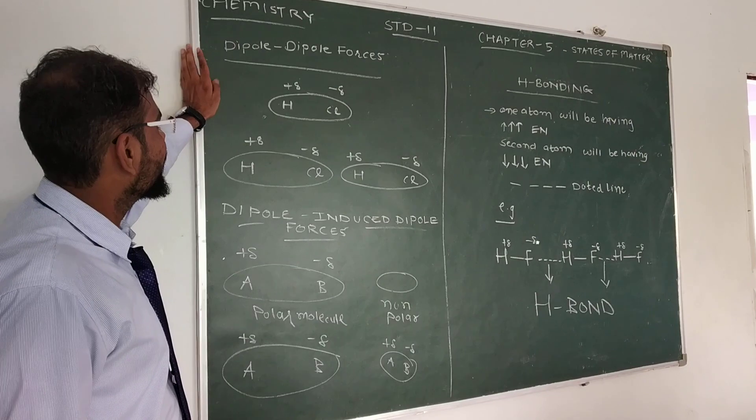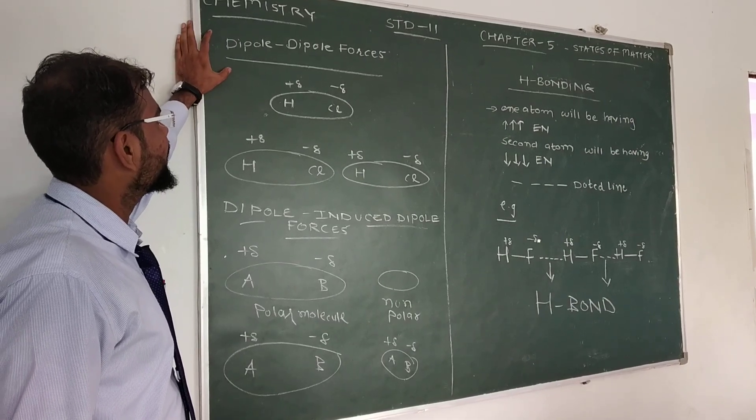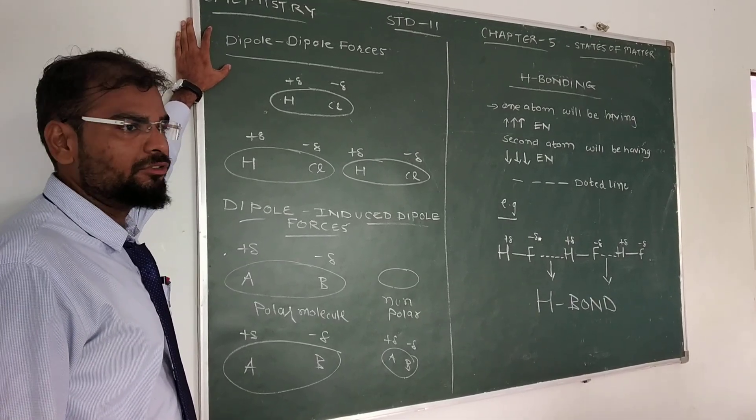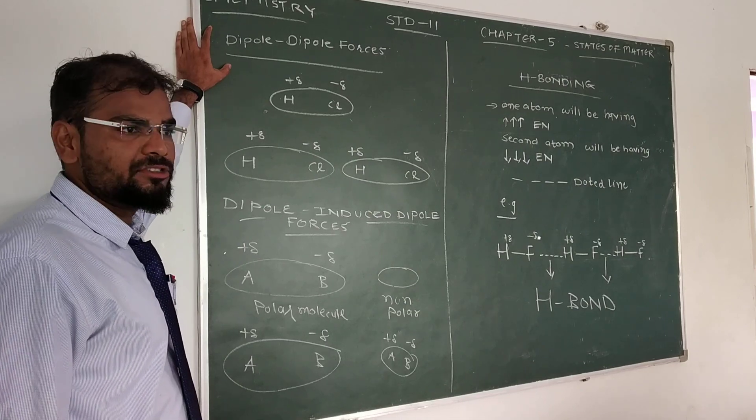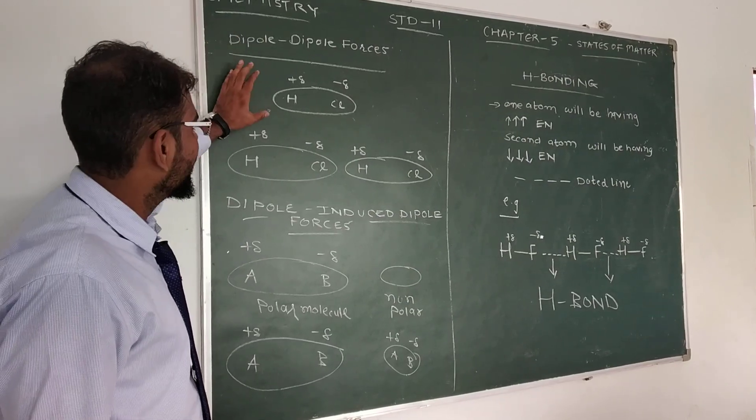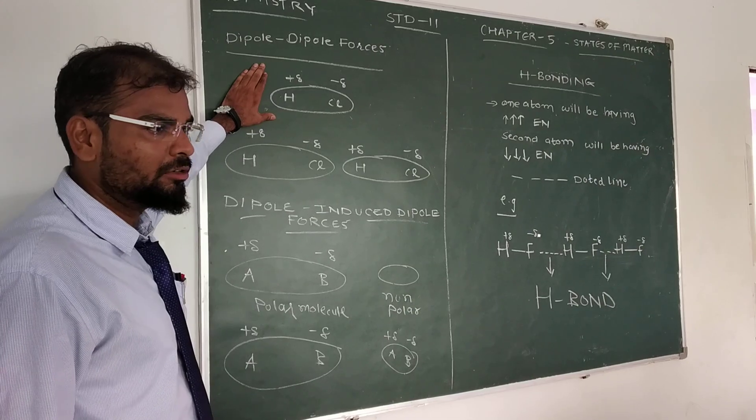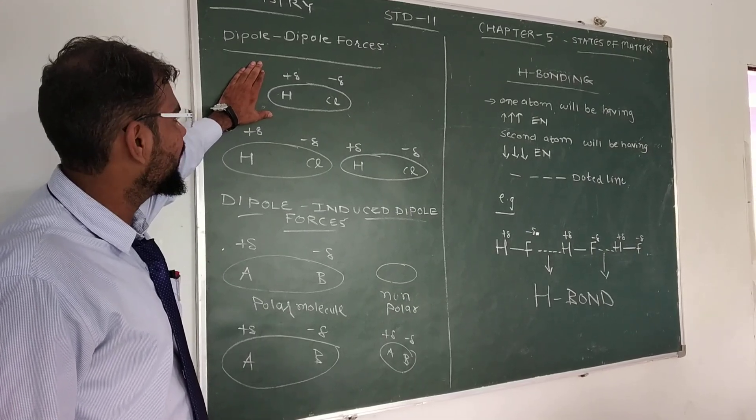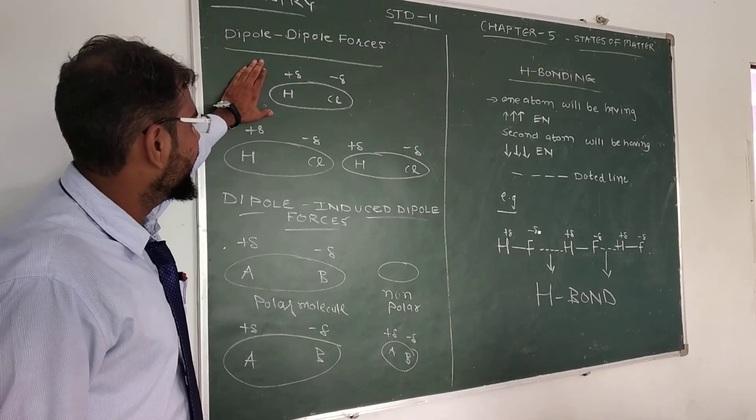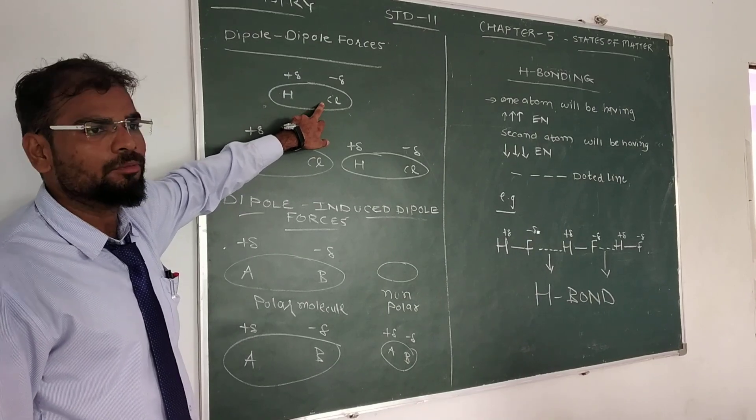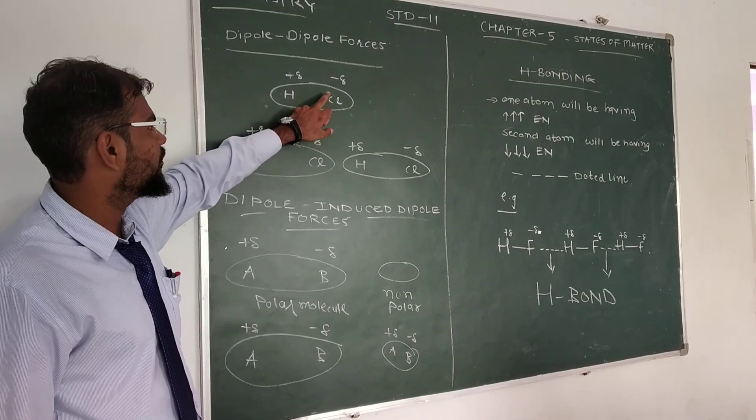In which the name of the force is dipole-dipole forces. Pole means charge, whereas dipole means two charges. Suppose I have written one of the molecules, the name is HCl, hydrogen chloride, which the electronegativity of chlorine is higher, so because of that,